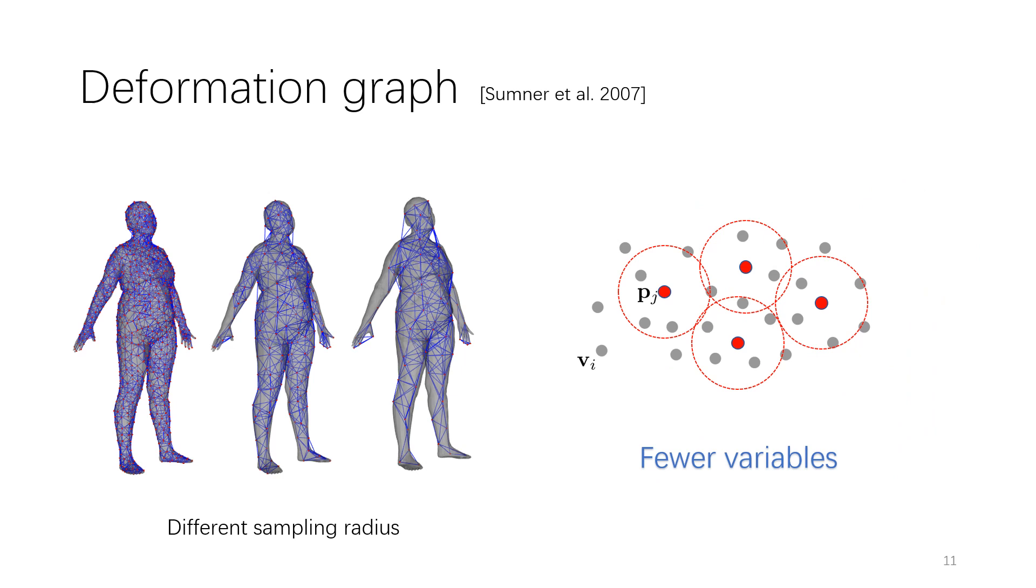We use a deformation graph to represent a deformed model, which can make the degrees of freedom lower, to reduce the computational cost. The sampling radius can be used as a trade-off between speed and accuracy.